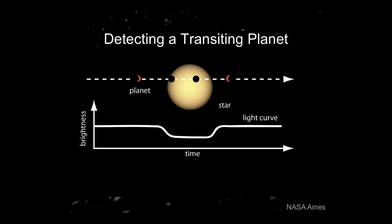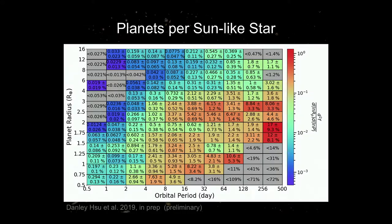For an Earth-like planet around a Sun-like star, it takes a NASA mission — a 1-meter class telescope — being able to measure the brightness of a star to within one part in 10 to the 4. That is the size of the signal introduced by Earth passing in front of the Sun. That's challenging, but the Kepler mission was able to do this quite well, and as a result it's found a few thousand extrasolar planet candidates.